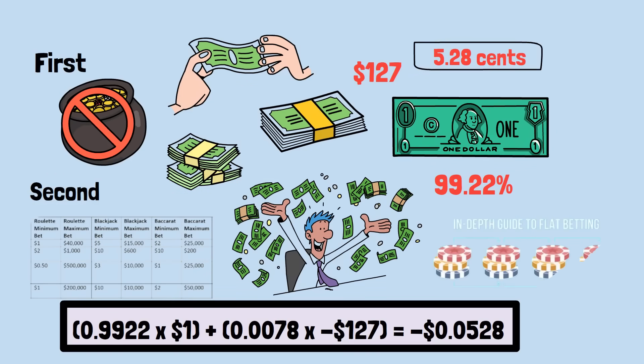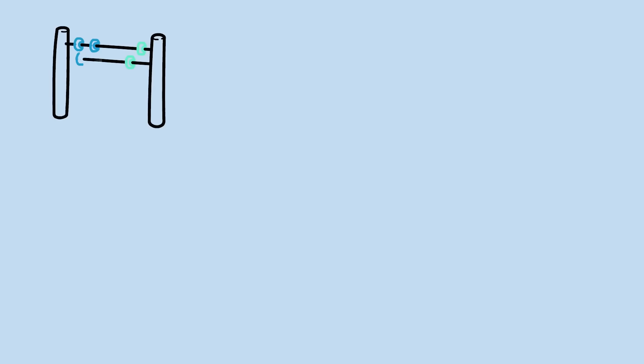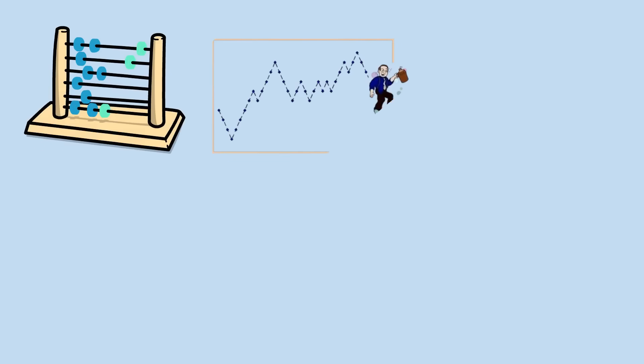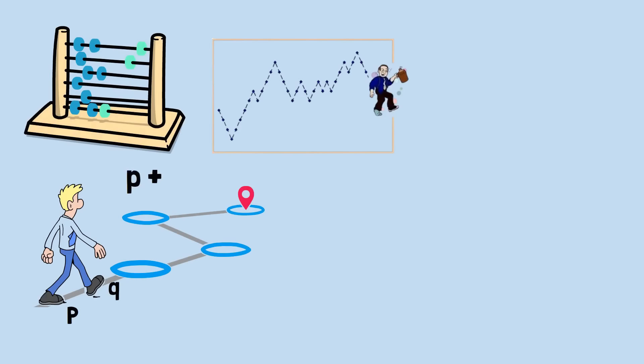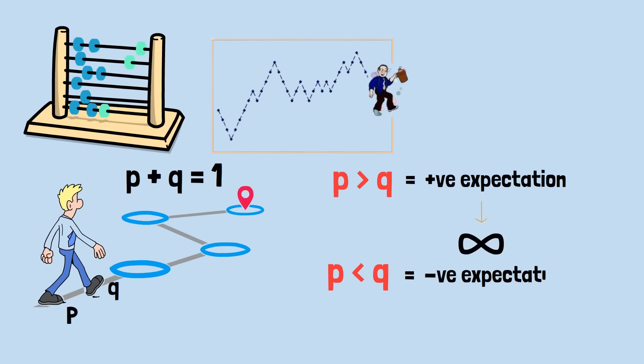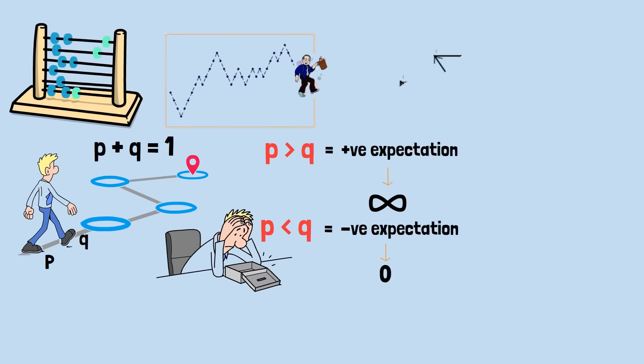The mathematical foundation underlying all these gambling scenarios is the random walk problem. Imagine you're standing on a number line. Each step, you move right with probability P or left with probability Q, where P plus Q equals 1. If P is greater than Q, meaning positive expectation, you'll generally drift rightward toward positive infinity. If P is less than Q, meaning negative expectation, you'll eventually reach zero and face ruin with mathematical certainty, regardless of your starting position.